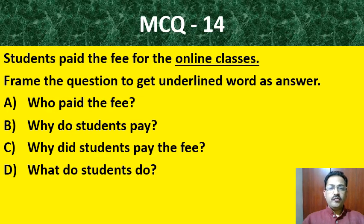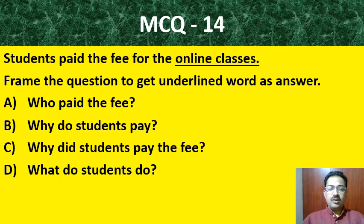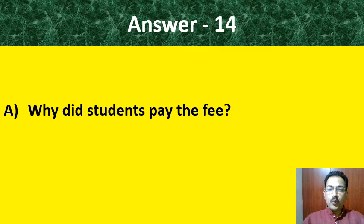MCQ 14: 'Students paid the fees for the online classes.' Frame the question to get the underlined word as the answer. Options: 'Who paid the fees?', 'Why do students pay?', 'Why did students pay the fee?', 'What do students do?' The correct option is: 'Why did students pay the fee for online classes?'